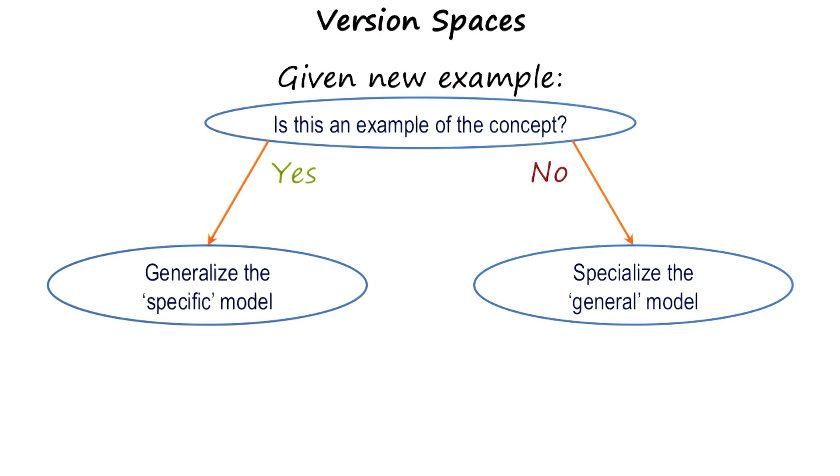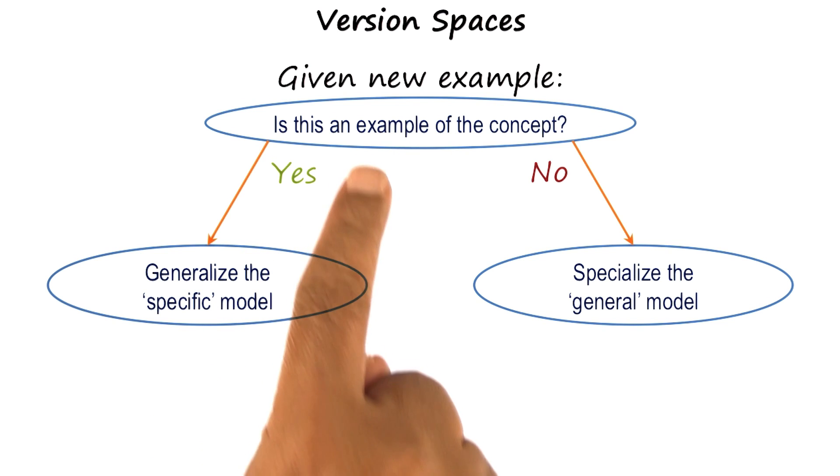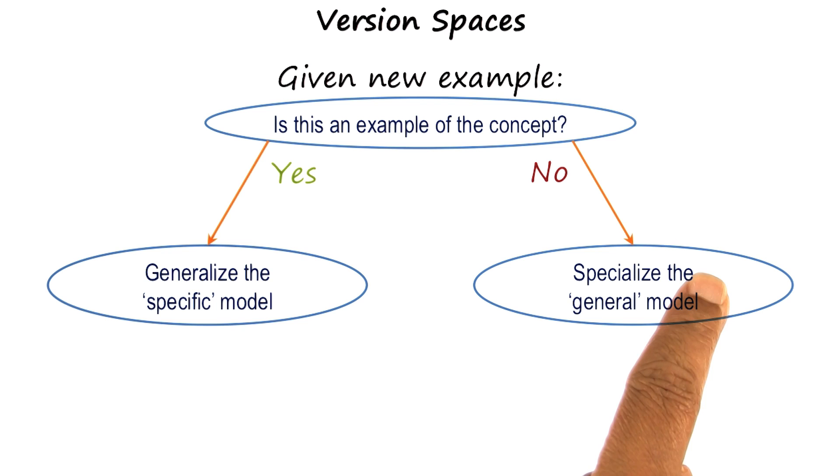In the version spaces technique of learning concepts incrementally, we always have a specific model and a general model. As a new example comes along, we ask ourselves, is this a positive example of the concept to be learned or a negative example of the concept to be learned?